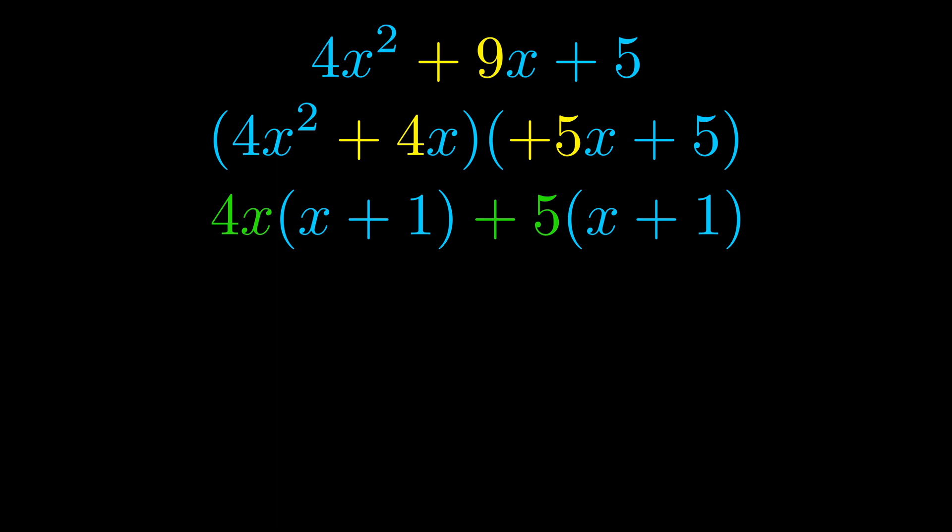Notice also how what remains inside of the parentheses is the same in both cases. The blue values are the same. Those blue values will become one of our factors and we will combine the two green values, the GCFs that we pulled out, to get the other one. And that is our fully factored equation.